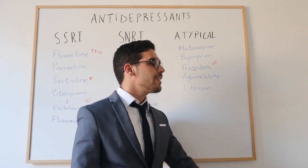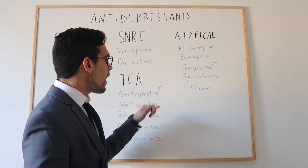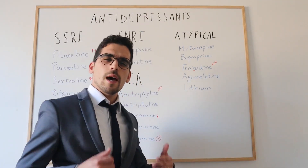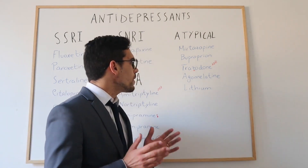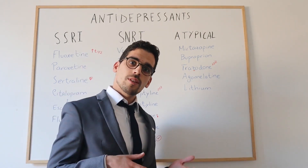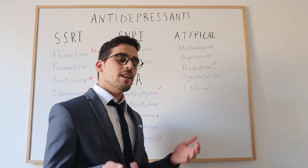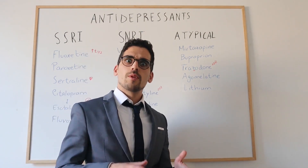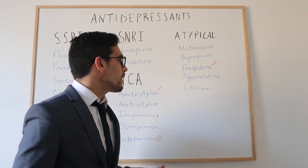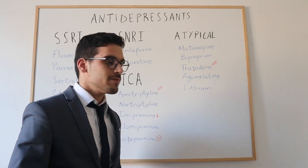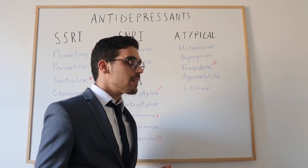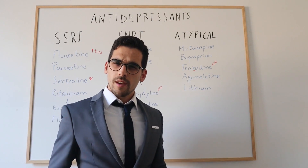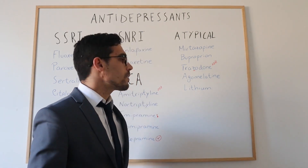The next atypical antidepressant is agomelatine. Agomelatine is basically a melatoninergic agonist — it acts like our melatonin, restoring the circadian rhythm and sleep pattern. That is its main mechanism of action. Unlike trazodone, it does not normally cause much sedation, and it does not cause weight gain either.